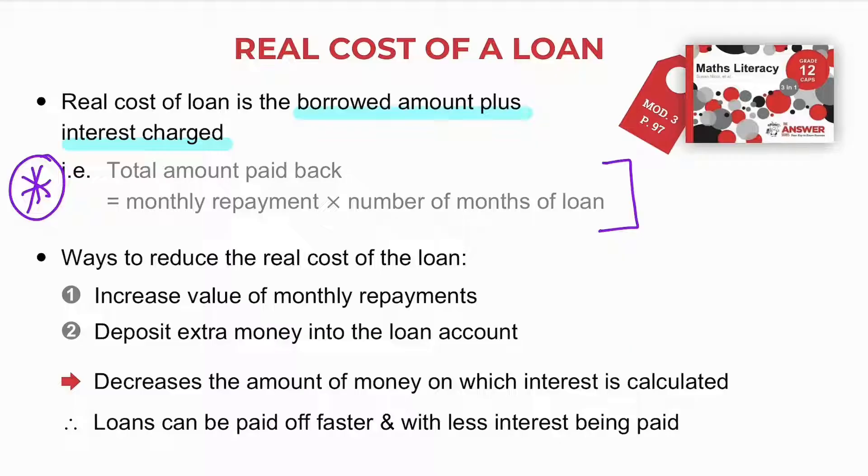There are different ways in which we can reduce the cost of a loan. We can either increase the value of your monthly repayments, or we can deposit extra money into the loan account. Both of these scenarios decrease the amount of money on which interest is calculated. In this way, your loan can be paid off faster and with less interest being paid.